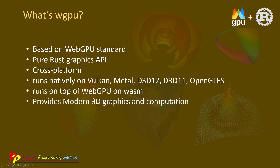WGPU runs natively on various graphics APIs, including Vulkan, Metal, DirectX 12, DirectX 11, and OpenGL ES. It can also run on top of WebGPU with WebAssembly, providing modern 3D graphics and computation capability with GPU acceleration.